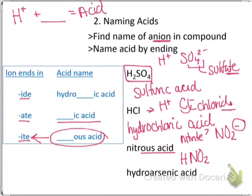The last example uses a hydro- prefix and an -ic acid suffix. So that means that my ion must end in -ide. I can see that the root of my word is arsen, so that must come from arsenic. So what I'm looking for is the arsenide ion. What is the arsenide ion?